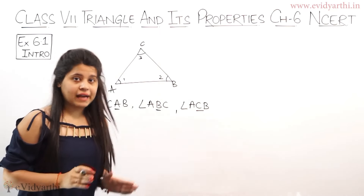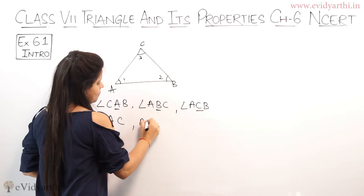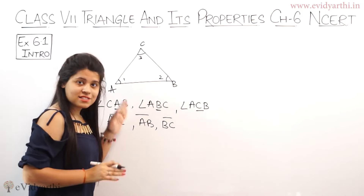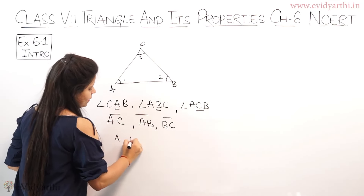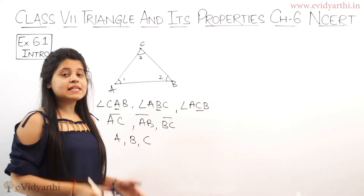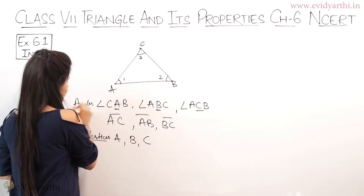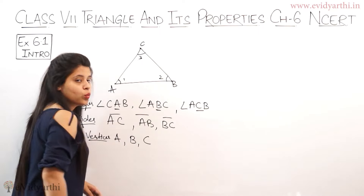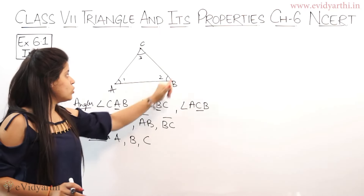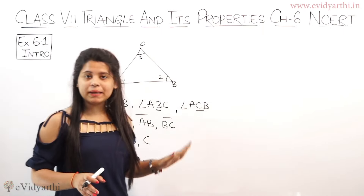Similarly, the triangle has three sides: AB, BC, and CA. Now the points A, B, and C — these are vertices. So a triangle has three main things: angles, sides, and vertices.